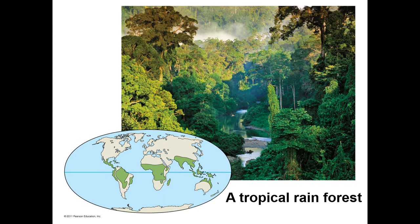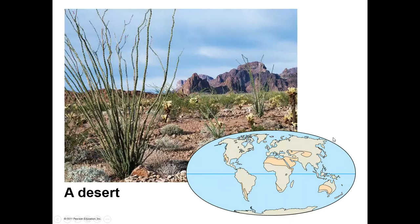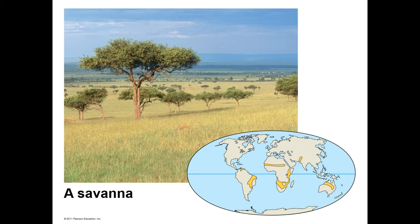A tropical rainforest has lots of water, a pretty consistent amount, and tends to be really warm — found mostly around the equator on the map. A desert has very little rainfall. Deserts can be pretty cold at night but tend to be hot during the day, though not always.